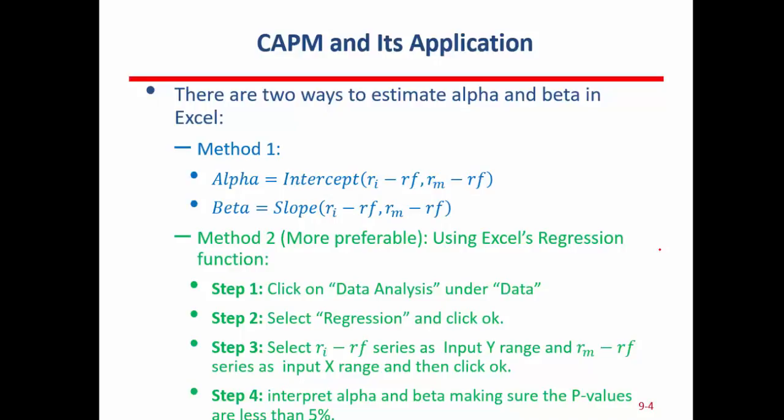There are two ways to estimate alpha and beta for the CAPM model in Excel. Method one: we can use Excel's INTERCEPT and SLOPE functions — that's the less favorable method. Method two, which is more favorable, is to use Excel's regression function. I have given you the steps here, and I'm going to show you now how to estimate the CAPM model in Excel.